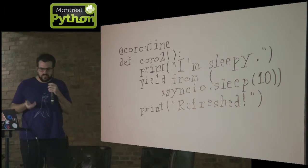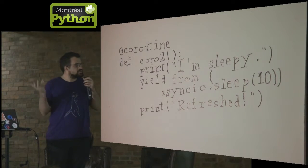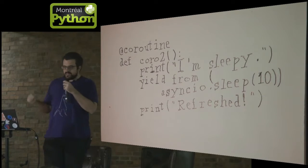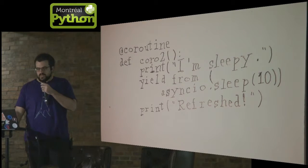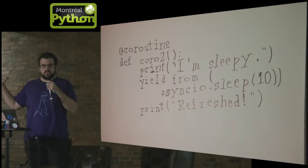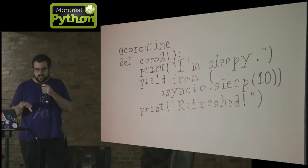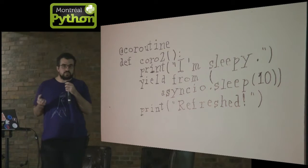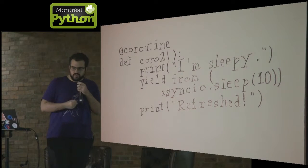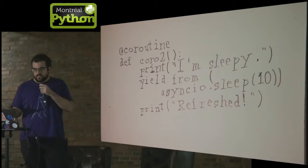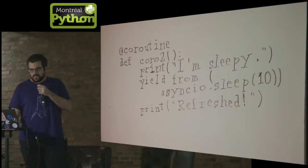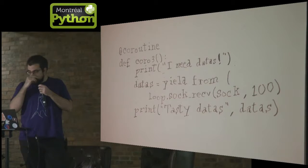Here's another example where we're using something slightly more interesting than just yielding control for no reason — we're sleeping. We print "I'm sleepy", and then yield. We don't use time.sleep; we use asyncio.sleep, which is a version of sleep that's designed to work with asyncio. And then when we get control back, we'll print "oh, much more refreshed now."